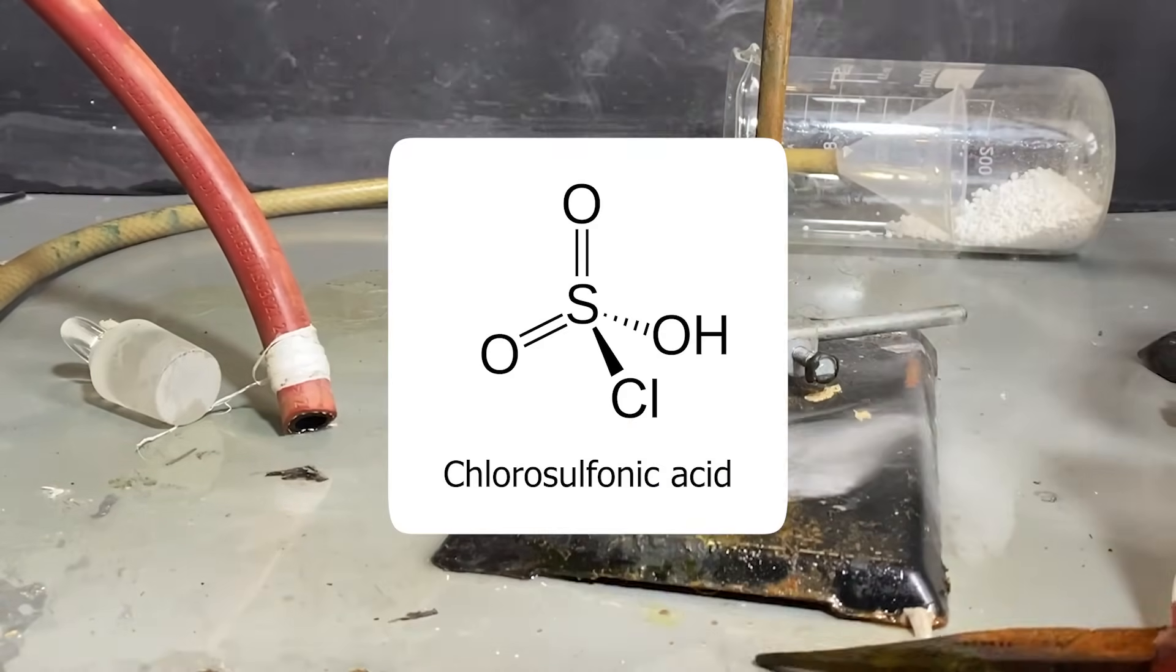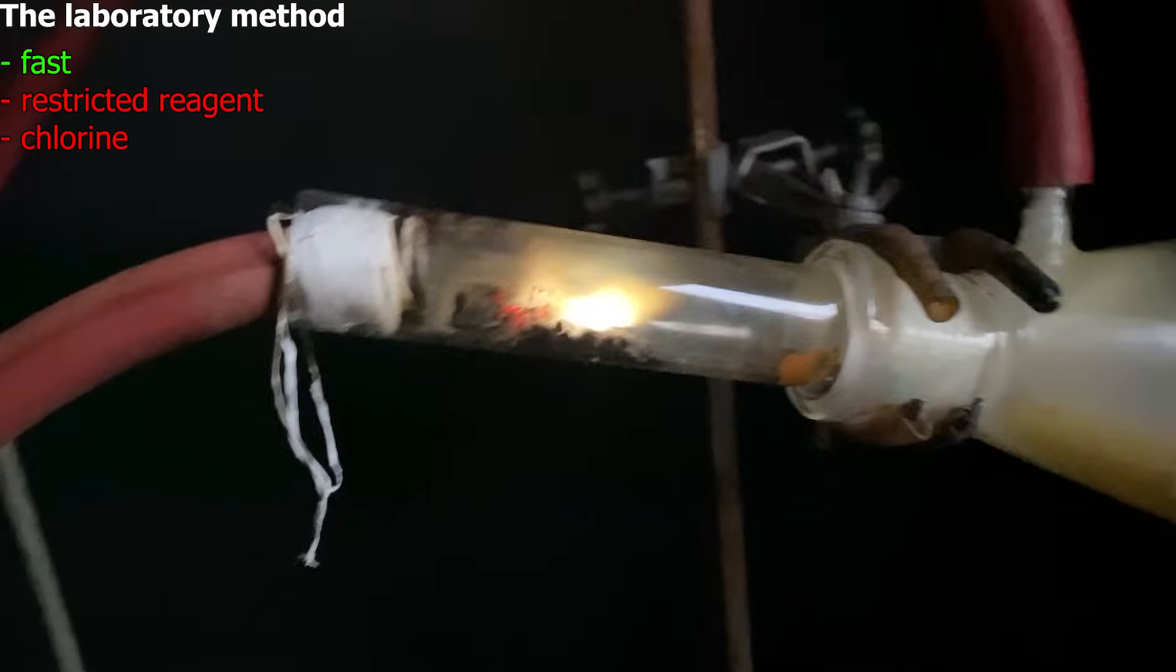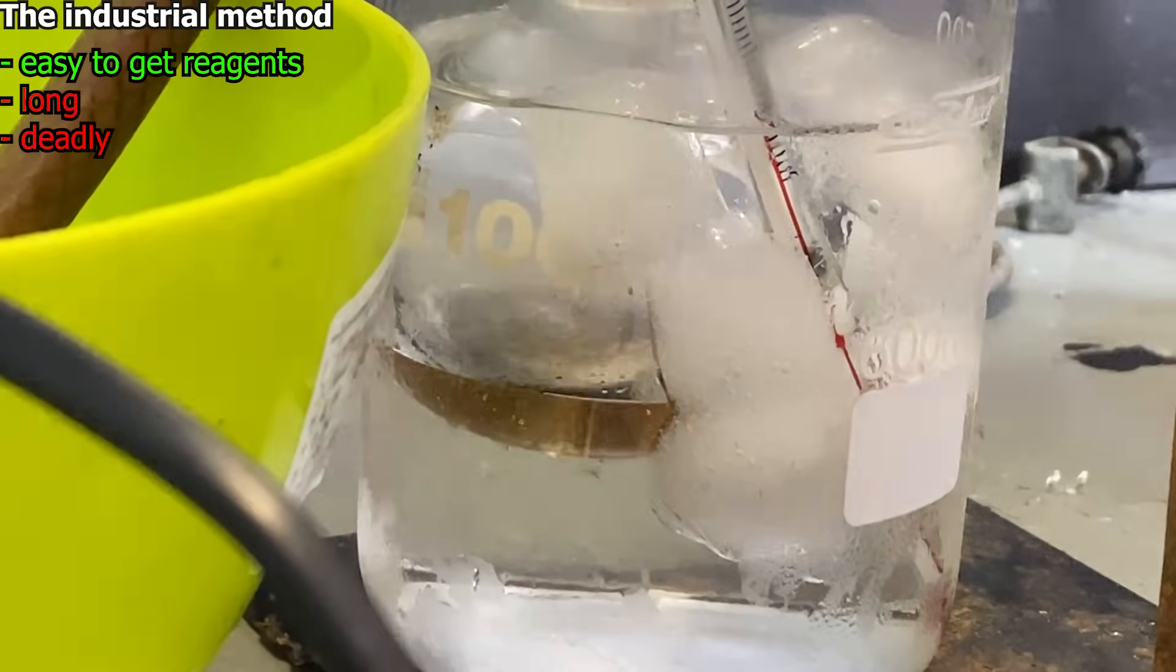This video will be making a superacid called chlorosulfonic acid in two different ways. In this exact order, the first one will be the classic laboratory method, and the second one will be the roundabout industrial one.